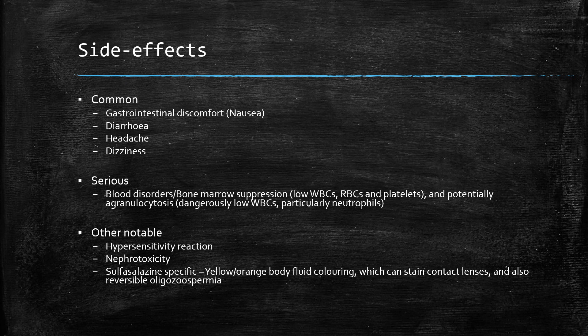Other notable side effects with sulfasalazine — since pre-registration exams love asking about obscure side effects — include nephrotoxicity and hypersensitivity reactions. Sulfasalazine-specific reactions include yellow/orange colouring of body fluids, in particular staining of contact lenses, and also reversible low sperm count. As soon as you stop sulfasalazine, the sperm count will start to come back up.